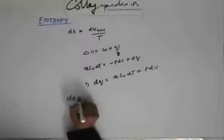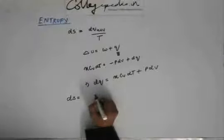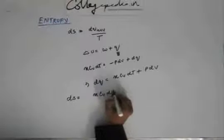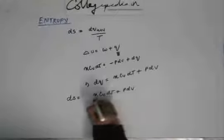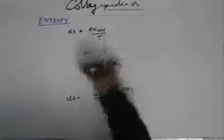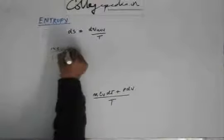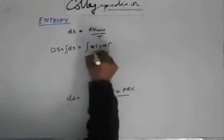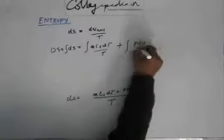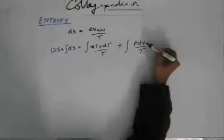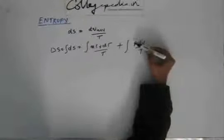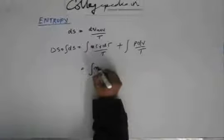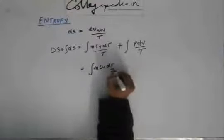Now, dS = dq_reversible / T, and dq_reversible here is nCv dT + p dV, so we divide by T. The total change in entropy ΔS = ∫dS = ∫(nCv dT/T) + ∫(p dV/T). The first integral is straightforward since it's dT/T. However, the second integral cannot be evaluated yet because the expression is not written as a function of volume.